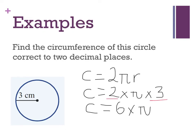6 times π when I get it up on my calculator is 18.8495. To two decimal places that's 18.84. That will be 18.85 centimeters because I've rounded to two decimal places.